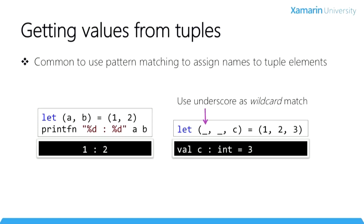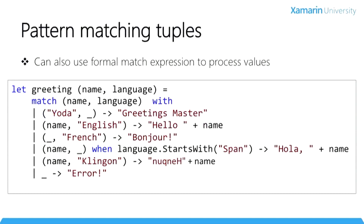When processing tuples, it's quite common to pattern match with a full match expression. Depending on the parameters passed, we'll get different results from our greeting function. Pass in Yoda — no matter what language — and we get 'greetings master'. Pass in English or Klingon and we get the translated greeting. Pass in anything else that starts with 'span' and we get Spanish. This is a good example of where we can use pattern matching with tuples.